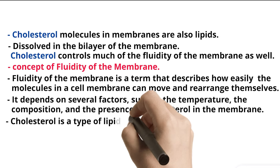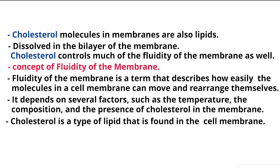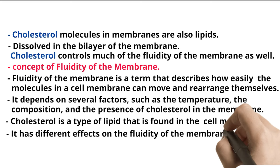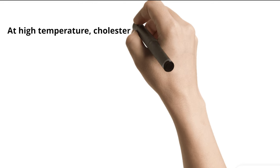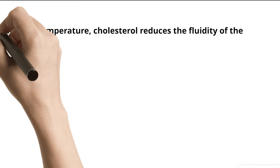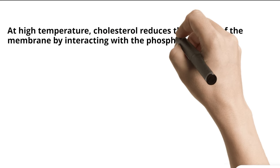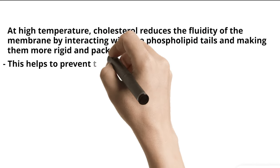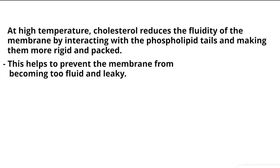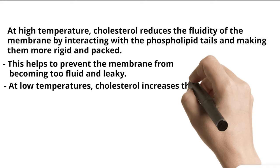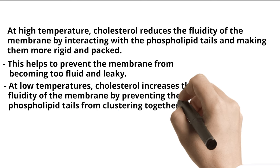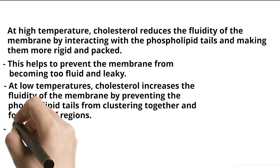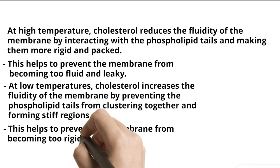Cholesterol is a type of lipid that is found in the cell membrane. It has different effects on the fluidity of the membrane depending on the temperature. At high temperature, cholesterol reduces the fluidity of the membrane by interacting with the phospholipid tails and making them more rigid and packed. This helps to prevent the membrane from becoming too fluid and leaky. At low temperatures, cholesterol increases the fluidity of the membrane by preventing the phospholipid tails from clustering together and forming stiff regions. This helps to prevent the membrane from becoming too rigid and brittle.